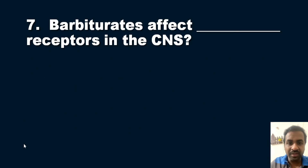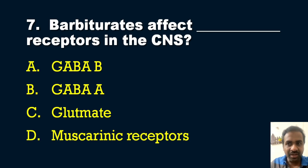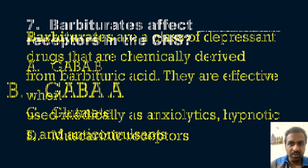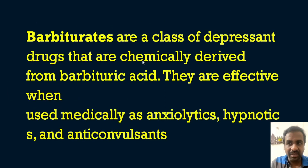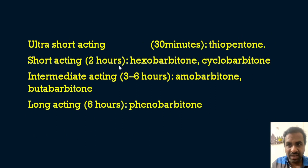Question seven: Barbiturates affect which receptors in the CNS? Options: A) GABA-B receptors, B) GABA-A receptors, C) Glutamate receptors, D) Muscarinic receptors. The answer is GABA-A receptors. Barbiturates are a class of depressant drugs chemically derived from barbituric acid. They are effective medically as anxiolytics, hypnotics, and anticonvulsants.